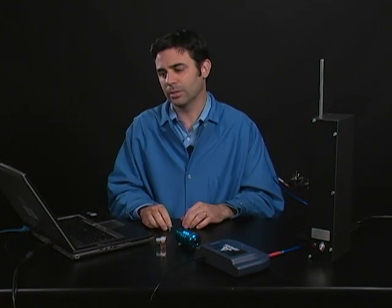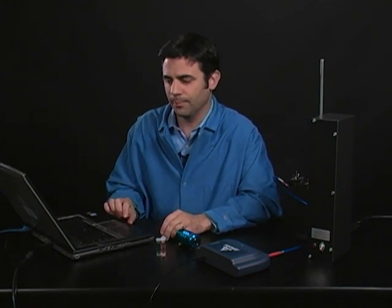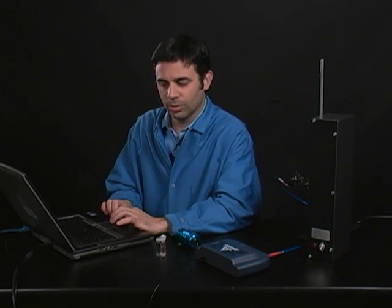So first, a little bit about how we're going to set this up. We're going to use this through SparkView, and when the Amadeus is plugged in, it automatically gives us these options: Intensity, minus dark, absorbance, transmission, and relative irradiance. We're not going to look at all of those, we're going to look at some of them.